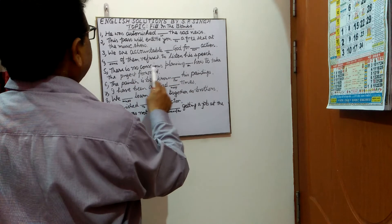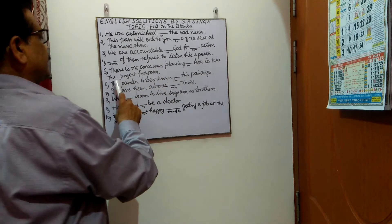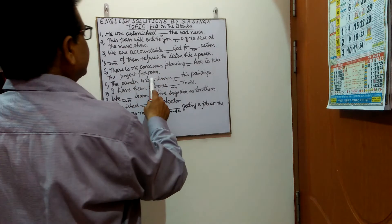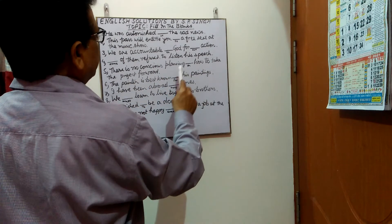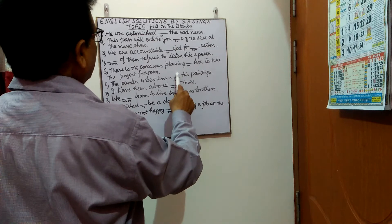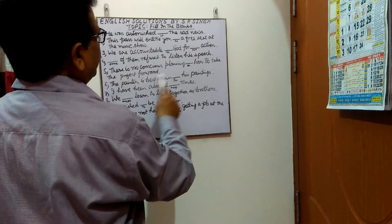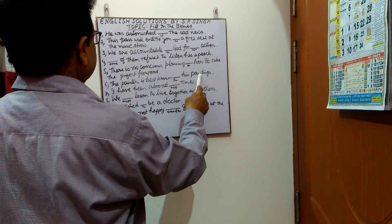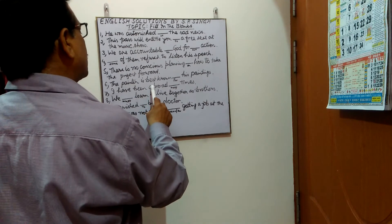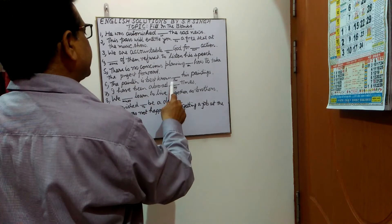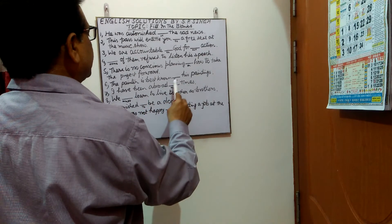Next sentence: 'The painter is best known ___ his paintings.' In the blank you have to put 'for'. The sentence will be: The painter is best known for his paintings.